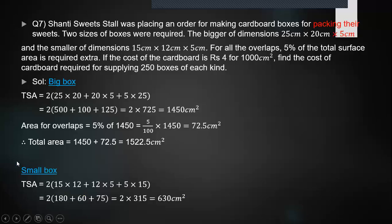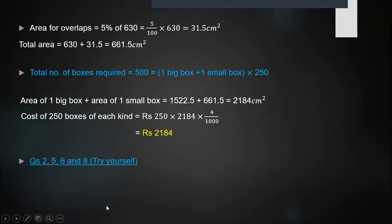Now, for working out the small box, you are going to go through the same steps. You first work out the total surface area of the small box, then you work out the area for overlaps, and you add the two, which comes out to be 661.5 cm².